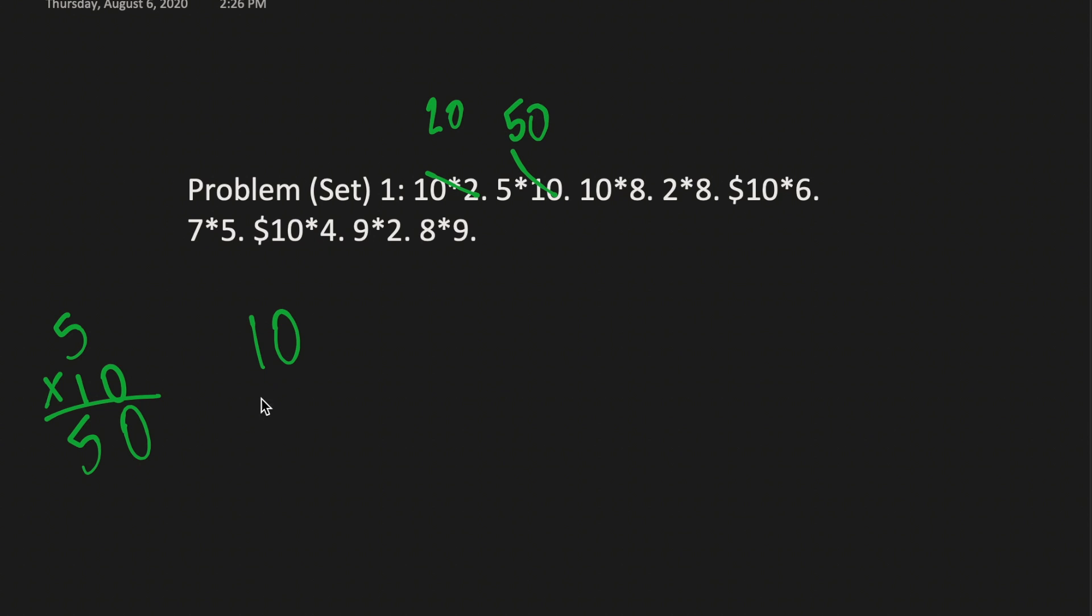Let's try 10 times 8 for a change. 1 times 8 is 8. 0 times 8 is 0. And you have yourself 80.